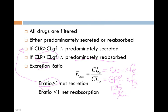So if this is greater than this, the E ratio is going to be greater than one. So then it must be predominantly secreted. If the E ratio is less than one, then that tells you that renal clearance is less than GFR. I don't like to use E ratio. I like to just say which of these is greater. I think it is a little bit clearer.